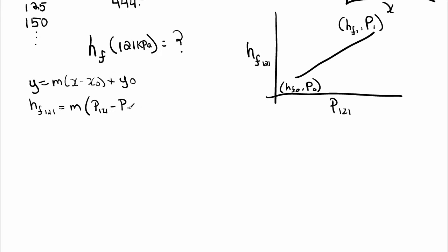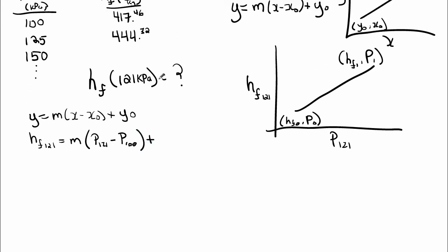So our p naught is 100, plus our y naught, which is 417.46. We'll just do our h_f naught. I'll take every step here. I want to make sure you guys understand this very clearly.